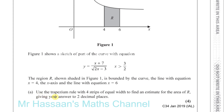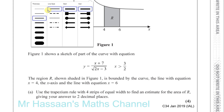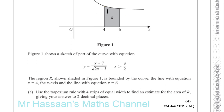Use the trapezium rule with 4 strips of equal width to find an estimate for the area of R, giving your answer to 2 decimal places. Basically what they want us to do here — I just want to illustrate what's happening — they want us to split this up into 4 different strips.